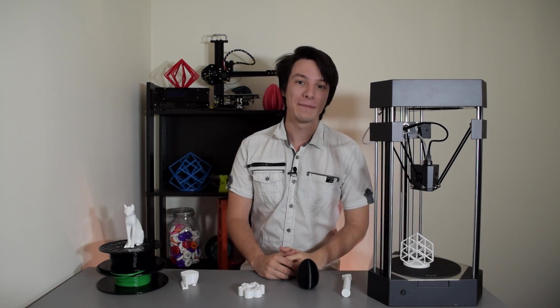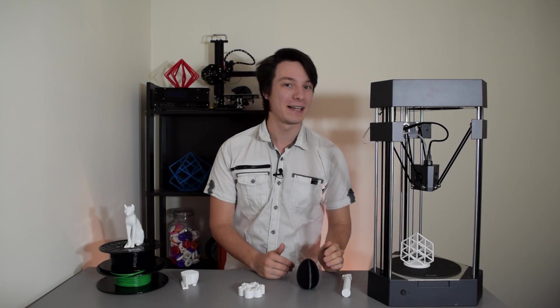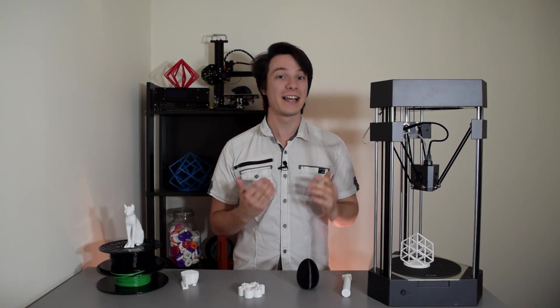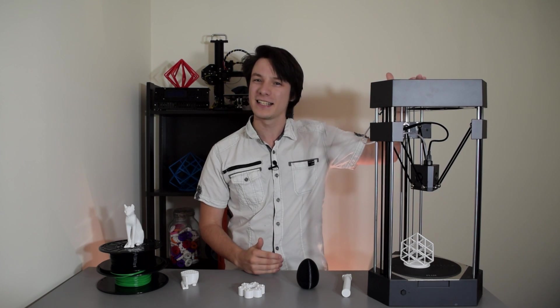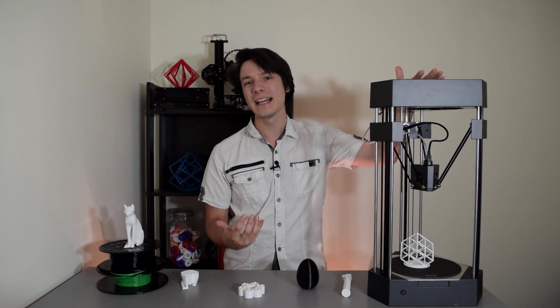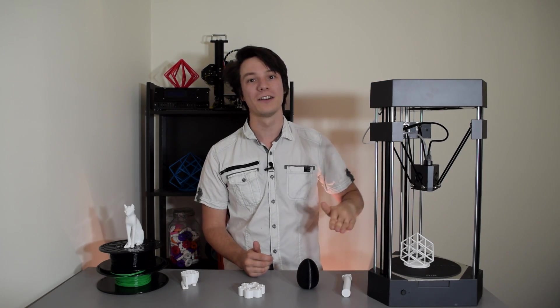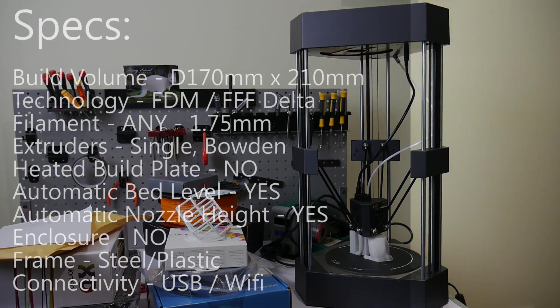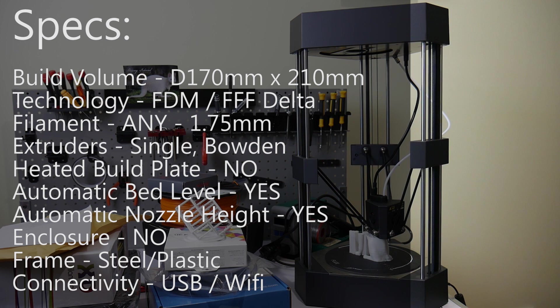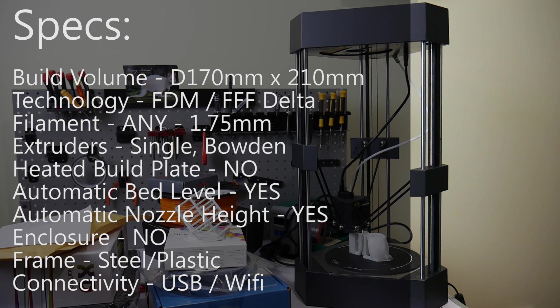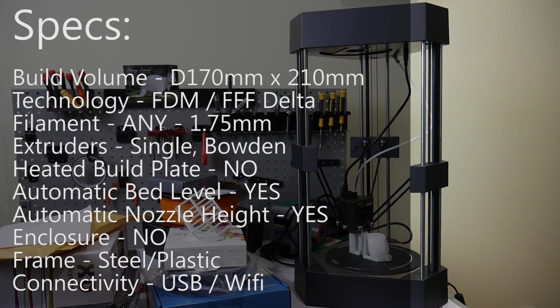For starters, this thing came in a way bigger box than I expected. It was well packaged and it's actually pretty large at just under 60 centimeters high. Being a delta design, this height is needed to give it a decent amount of Z height.